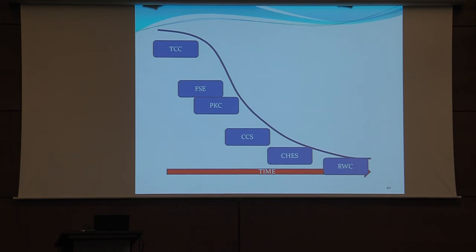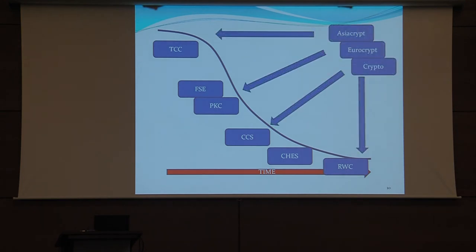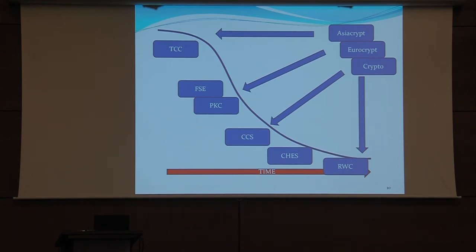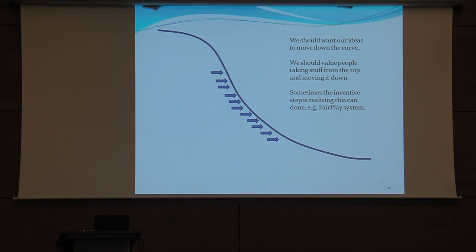So where do our conferences sit? TCC should be theory, Real World Crypto should be real world — I'm not saying never the twain shall meet, but this is kind of where they are. And this is good — we cover the whole spectrum. What about the main flagship conferences? The flagship conferences are about everything. We have many talks that are very theoretical and very many talks which are applied. We should want our ideas to move down the curve, and we should value people who take stuff from the top to the bottom.